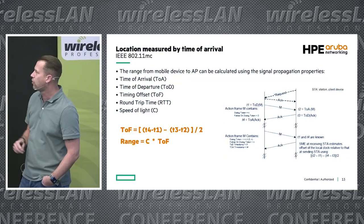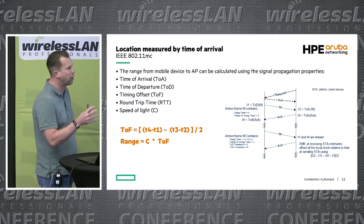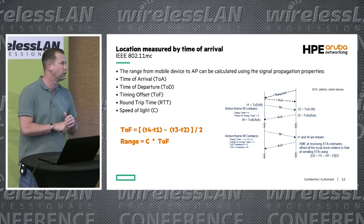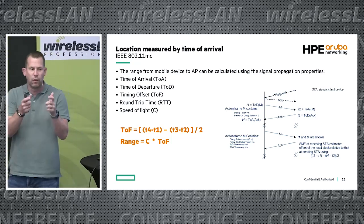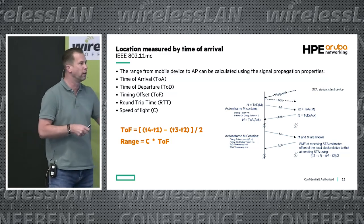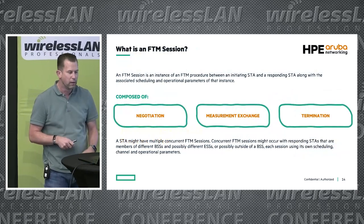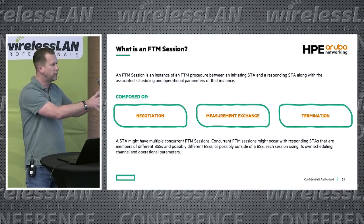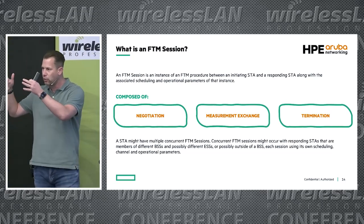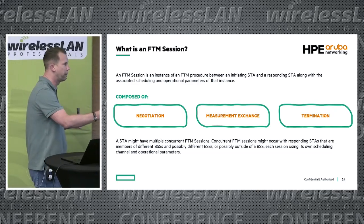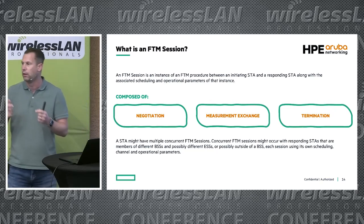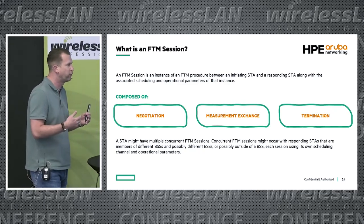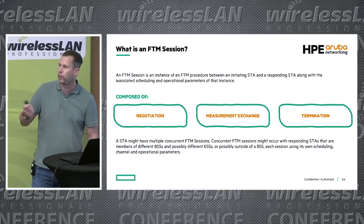There are a few key acronyms: time of arrival, time of departure, time offset, round-trip time, and speed of light. You can see in the diagram when each measurement point occurs. An FTM session is composed of a negotiation phase, an exchange of measurements, and a termination. Every station can have multiple FTM sessions simultaneously, each with their own scheduling parameters — so keep in mind that multiple location services can maintain separate sessions.